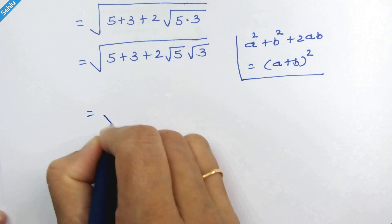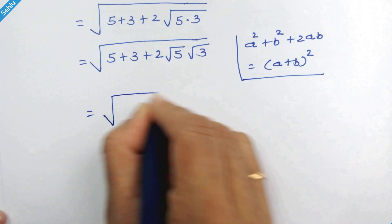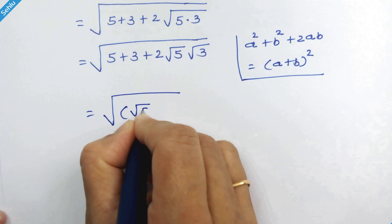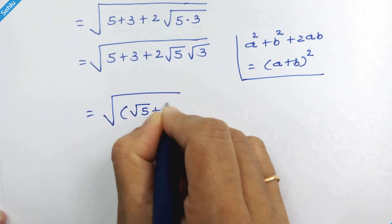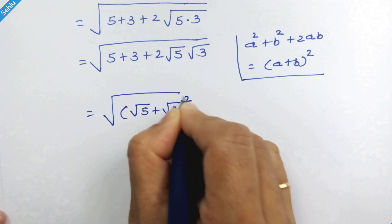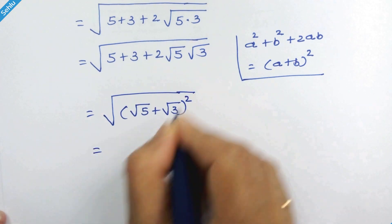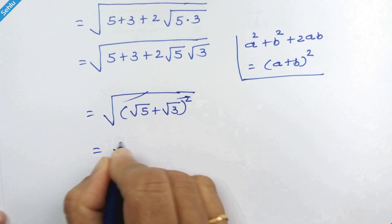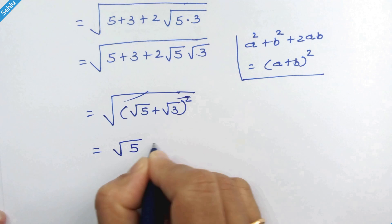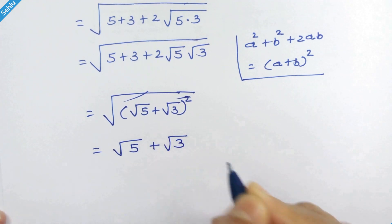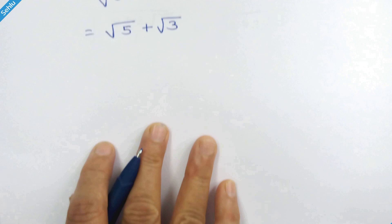Here we relate a as square root of 5 and b as square root of 3. So it will be square root of square root 5 plus square root 3, whole squared. The square and square root cancel out, giving us square root 5 plus square root 3. This is our answer.